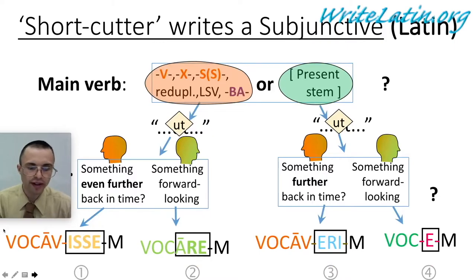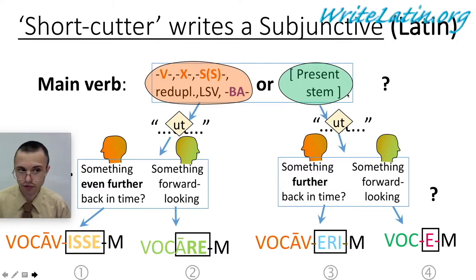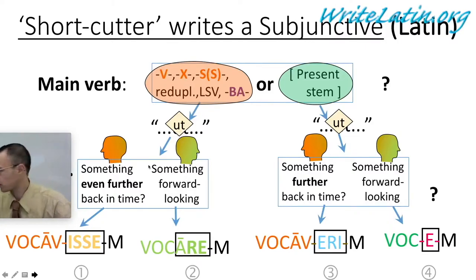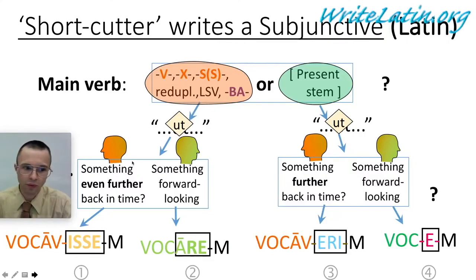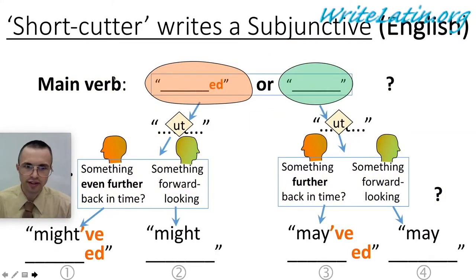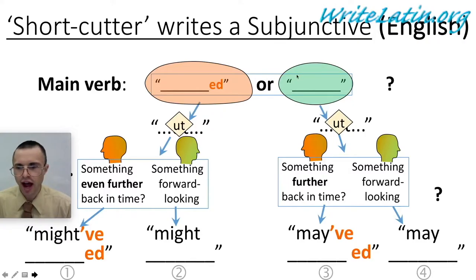This brings in the second, easier way to think about it: does it feel past-ish, or does it feel present-future-ish? Once you decide that, you say 'ut,' which means 'so that.' Then you just need to know by experience which two subjunctives go with the past main verb and which is the apostrophe-VE one. In English: 'I blanked so that I might blank or might have blanked.' And on the right: 'I blank so that I may blank or may have blanked.'